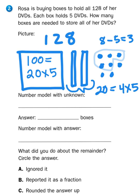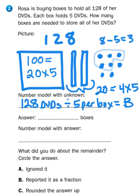So when I create my number model, it's going to look something like this. 128 DVDs divided into groups of 5, which is 5 per box, is going to give me a blank number of boxes. So how many boxes do I need? Well, I need 20 boxes for my 100 DVDs. I need 4 boxes for my 20 DVDs.